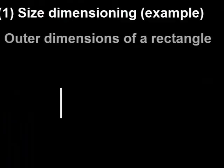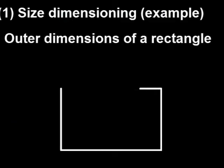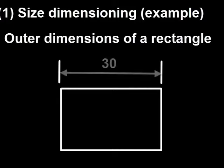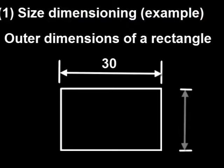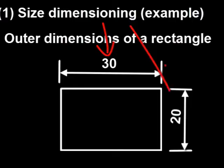In size dimensioning, we try to dimension the size of an object. For example, here we have a rectangle. The length of this rectangle is 30 and the height is 20. So these are the sizes of this rectangle.